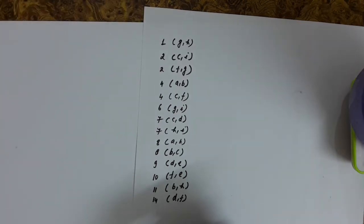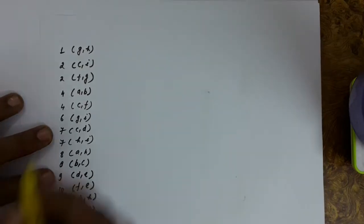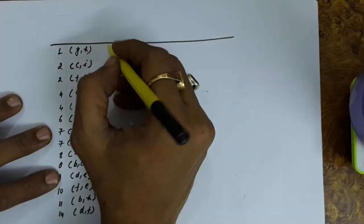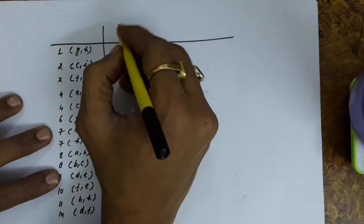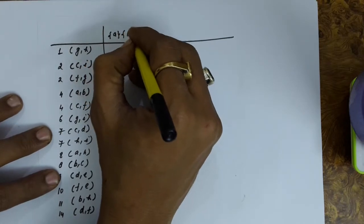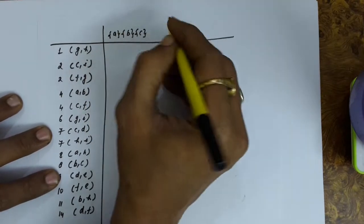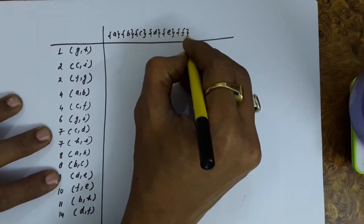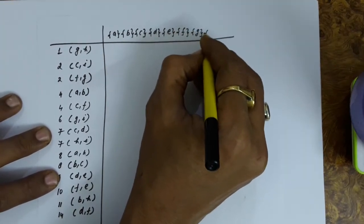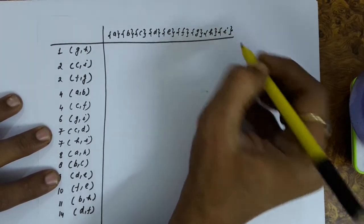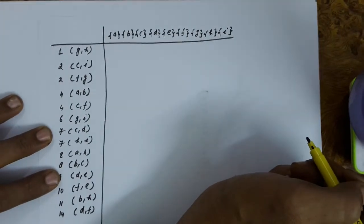Now we perform make set operations for all vertices. We create as many sets as there are vertices in the graph. For vertices A through I, we form nine individual sets, each vertex being the leader of its own set.